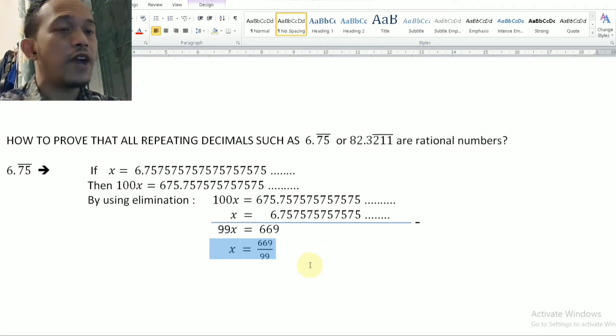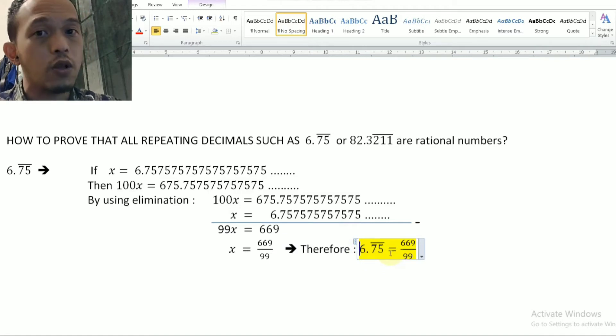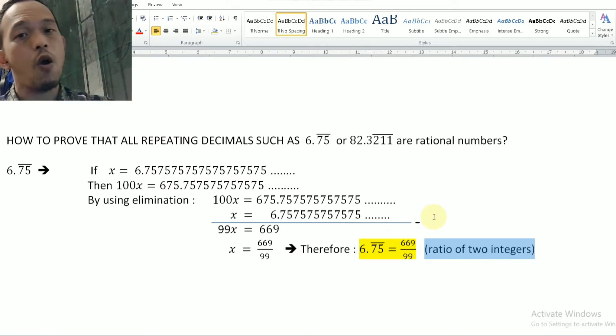And I will find the value of x equals 669 over 99. Since the first assumption is that x equals 6.7575, therefore, 6.757575 and so on equals to exactly 669 over 99, which is a ratio of two integers. You can check it by your calculator. When you divide 669 by 99, you will find distributing decimals. So that is how you prove that 6.7575 and so on is a ratio of numbers.